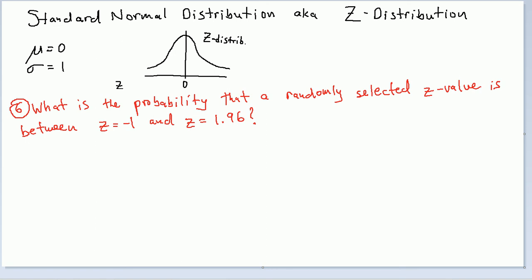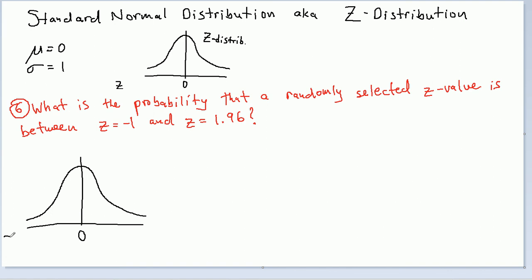So once again, what is the probability that a randomly selected z value is between z equals negative 1 and z equals 1.96? Let's draw our z distribution. The center is 0. Here is negative 1, and here somewhere is 1.96. Let's shade the region we're interested in — let me shade this part in green and this part in purple.